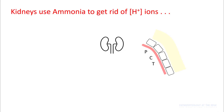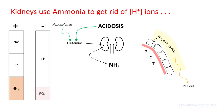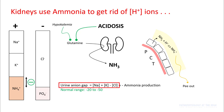Kidneys use ammonia to get rid of hydrogen ions, and this ammonia comes from the amino acid glutamine. Ammonia is excreted in urine where it combines with hydrogen ions and is excreted as ammonium ion. Acidosis and hypokalemia stimulate this pathway. If you look at urine, there are positive and negative ions just like your serum: in the positive compartment you have sodium, potassium, and ammonium; in the negative compartment you have chloride, phosphate, and other organic anions. You can calculate a urine ion gap as sodium plus potassium minus chloride, which gives you the amount of ammonia production.